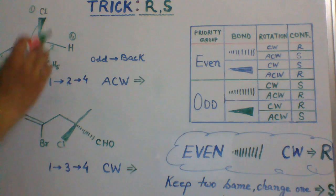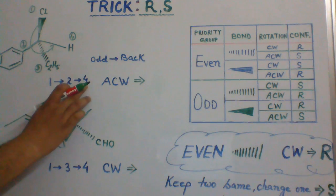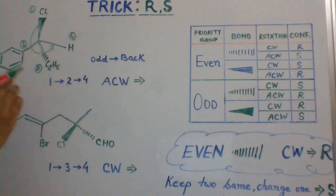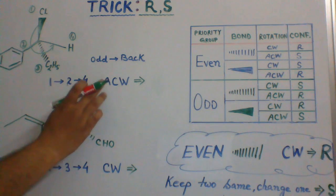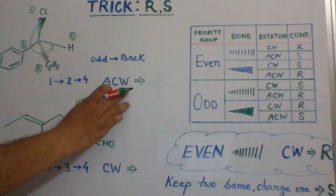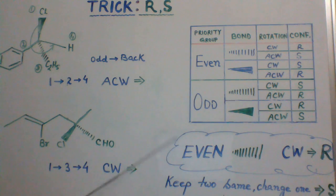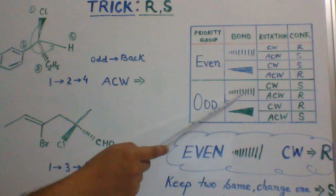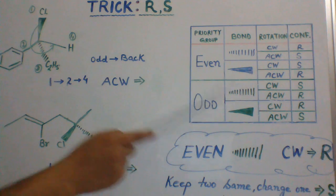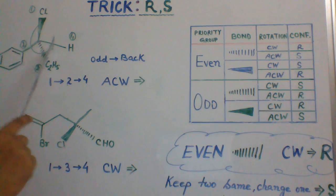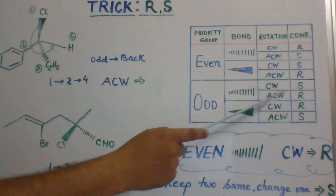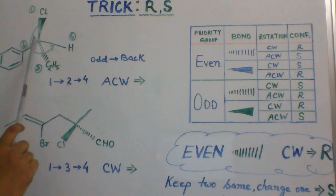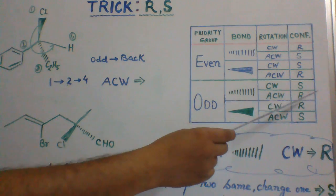Now, connecting one, two, four — leaving the odd priority group which is pointing below the plane — we get anticlockwise movement. When the odd priority group is below the plane of the board and connecting all other priority groups makes anticlockwise movement, then the stereogenic center is configured as R.